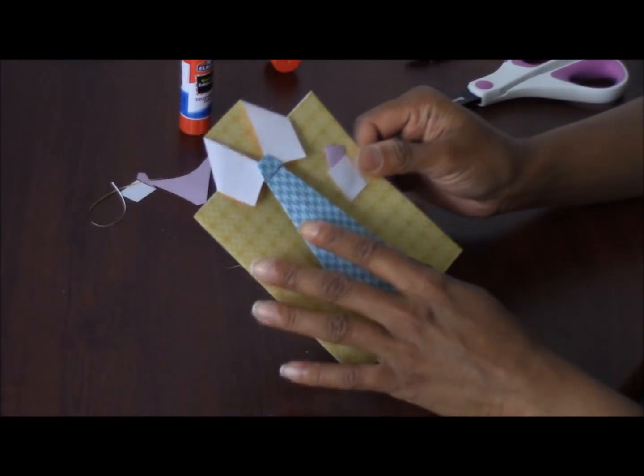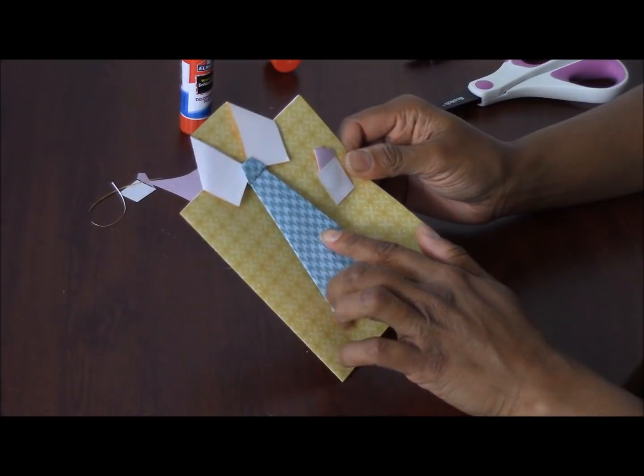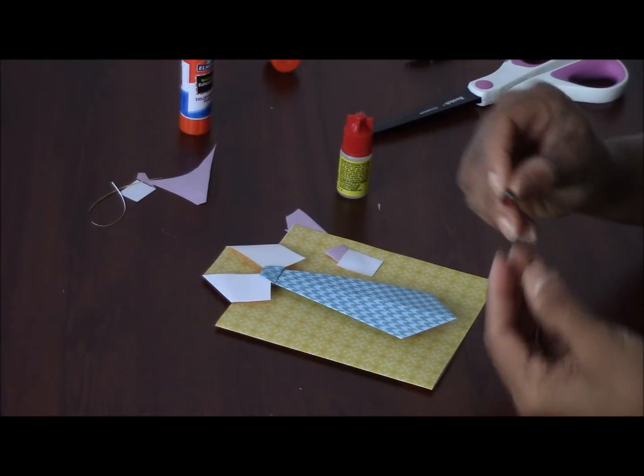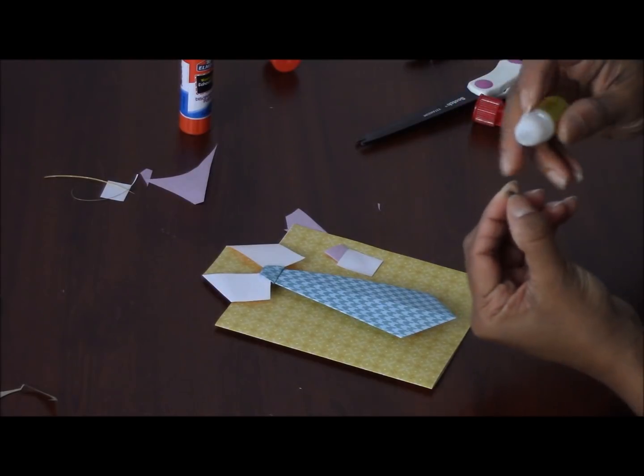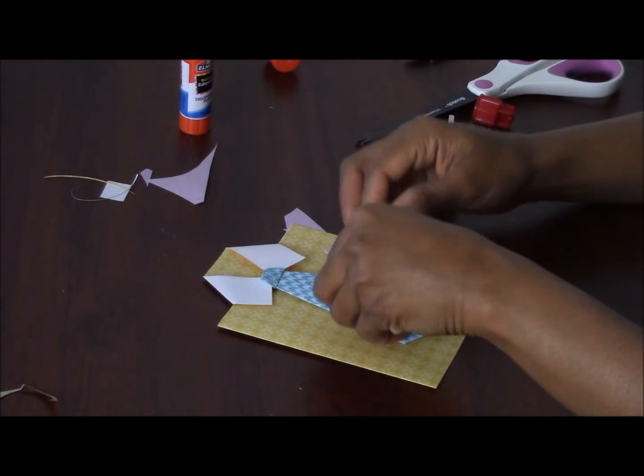Next I want to add a tie pin over here. I have this cute little teddy bear from one of my broken earrings, so I'm using that and gluing it on top of the tie. And we're done.